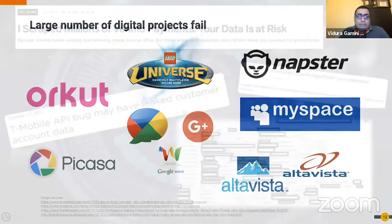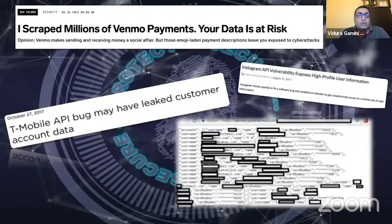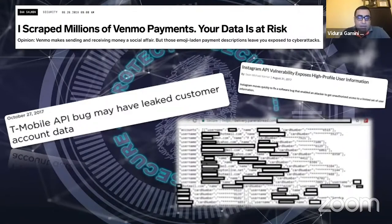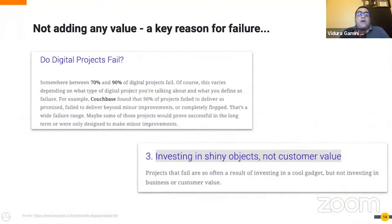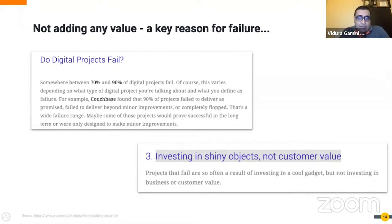Projects like this can fail for various reasons. Some fail due to security failures or breaches — security is a very important aspect of an API value chain and supply chain. But one of the key reasons for API projects failing is not really adding value through your APIs. We've come across many instances where a customer sets up an API platform but the project fails due to lack of business value or lack of value to the customer.